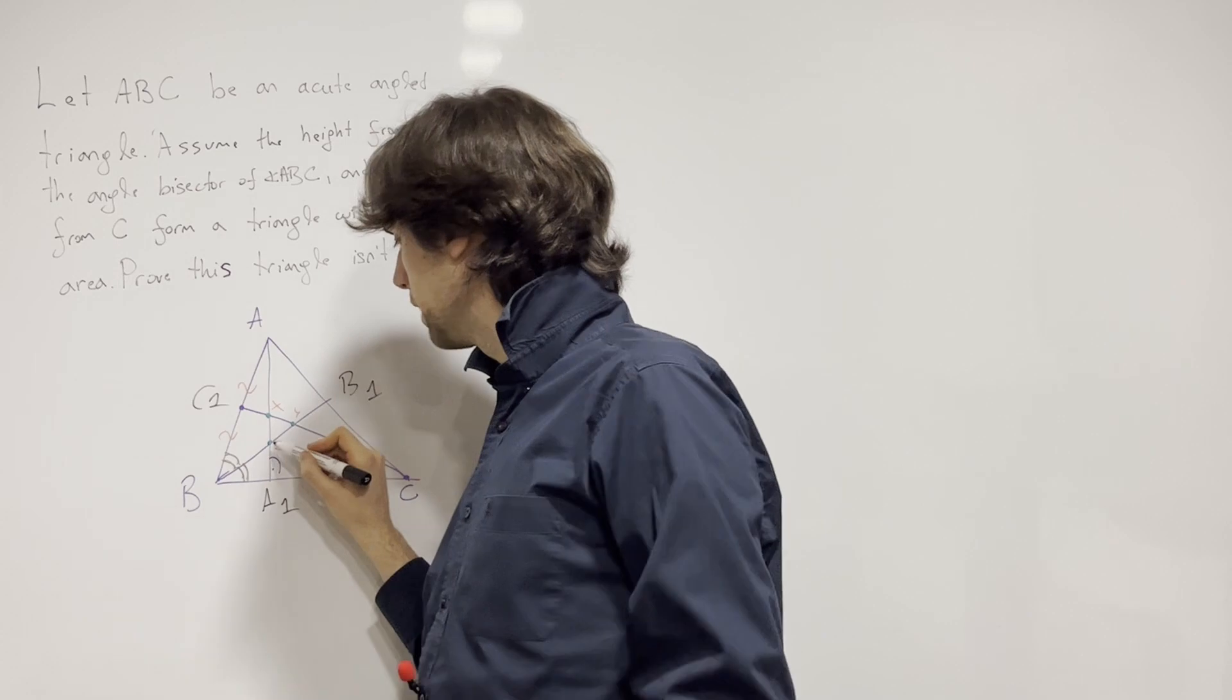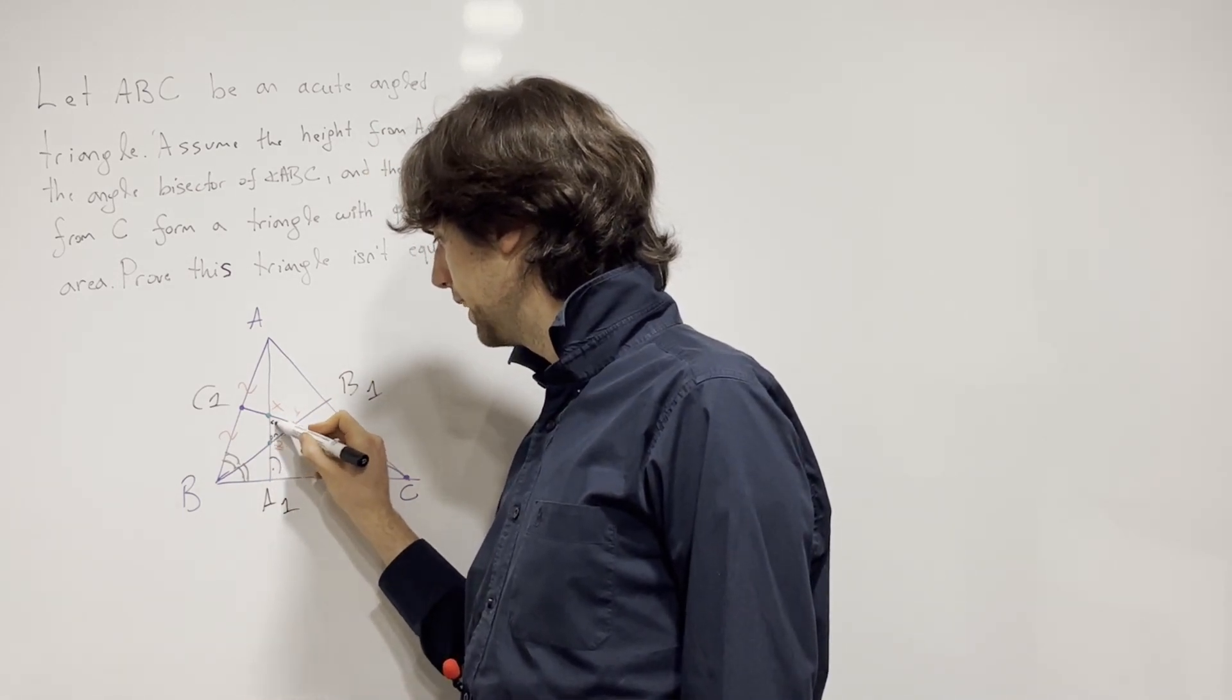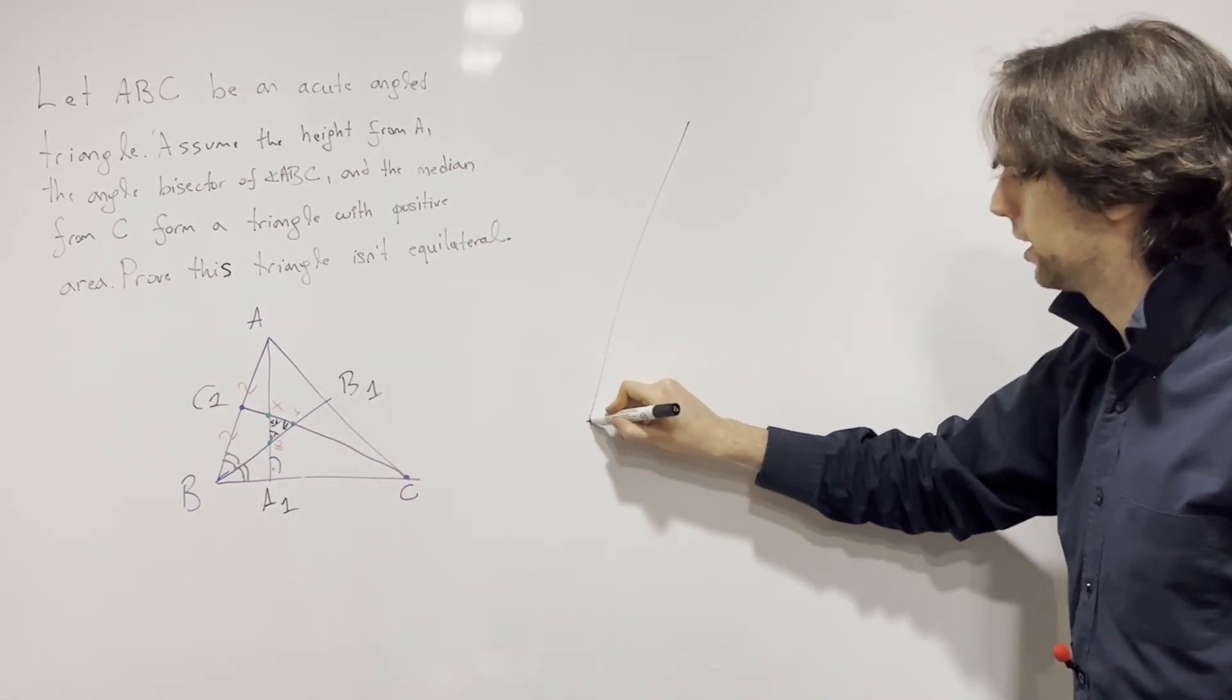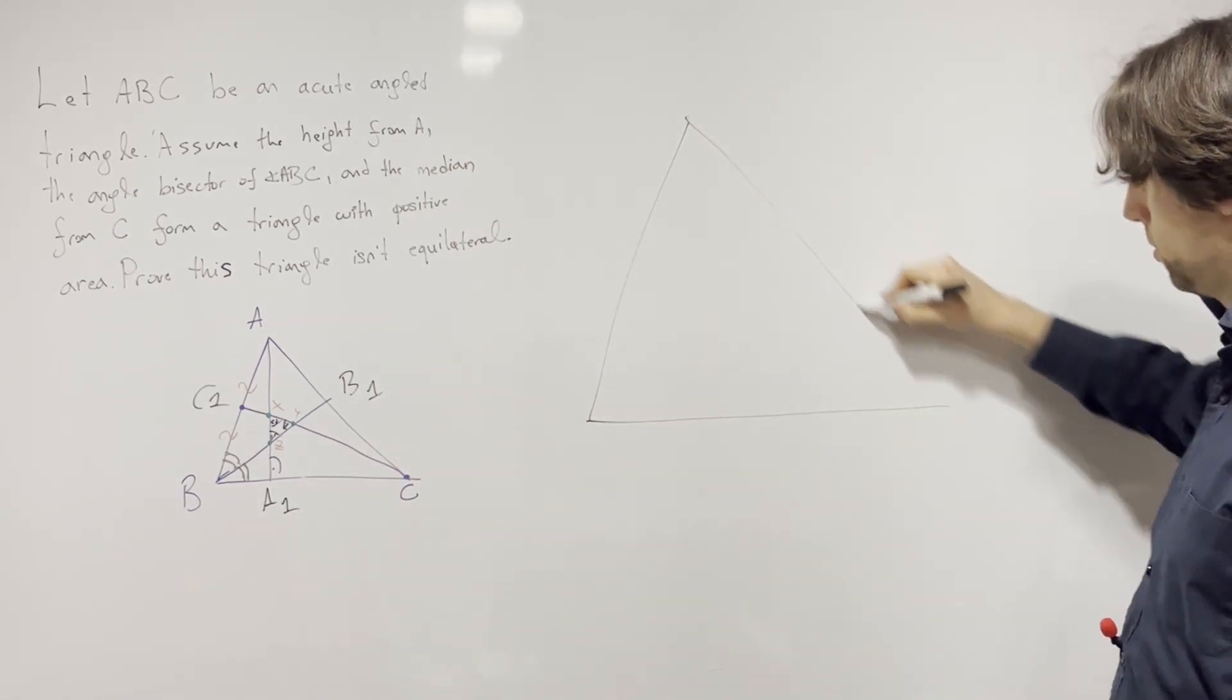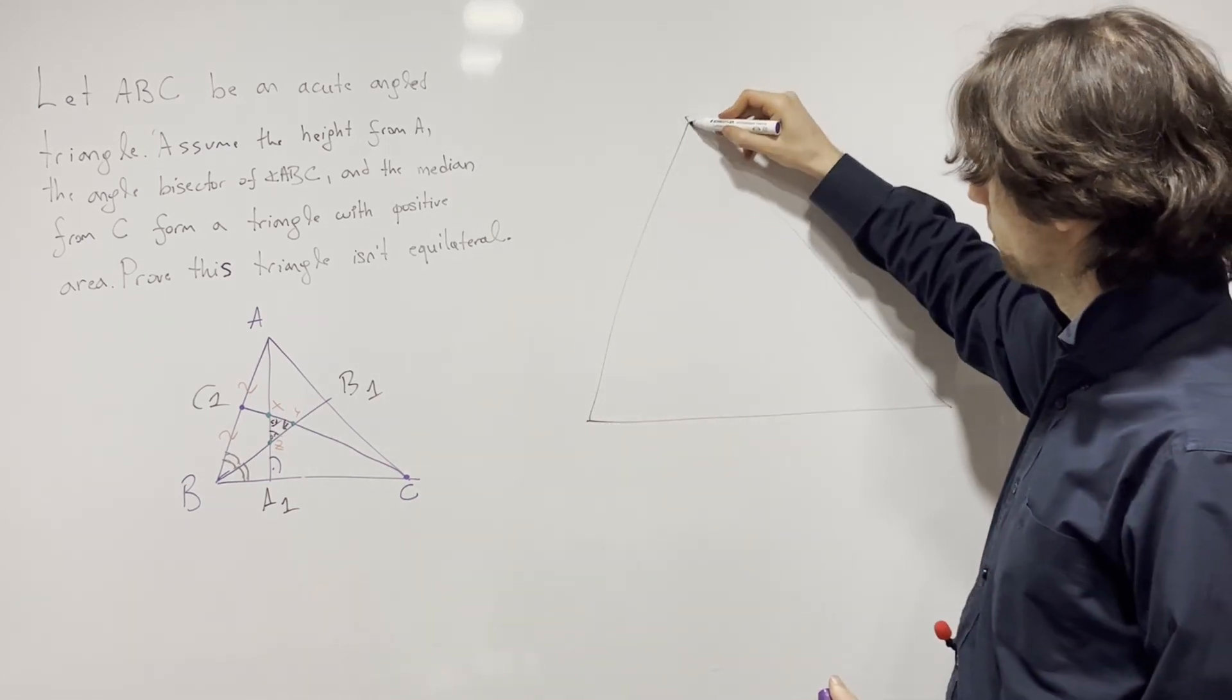And here we would do that by assuming that this triangle, it is equilateral, which means this triangle XYZ has angles that are 60, 60, and 60.